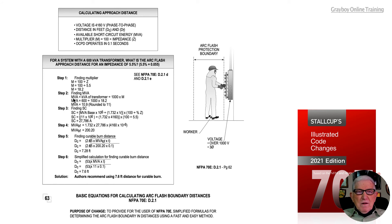Step two, to determine the MVA we take the kVA of the transformer which is 600, divide that by 1000, times the multiplier of 18.2. We come up with an MVA rating of 10.9 rounded up to 11.